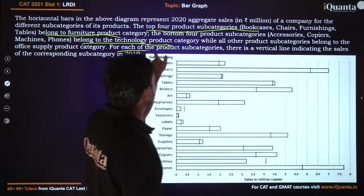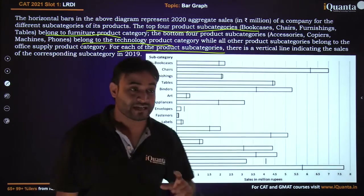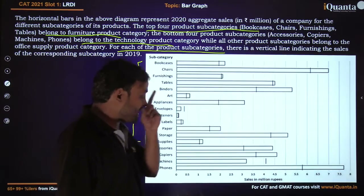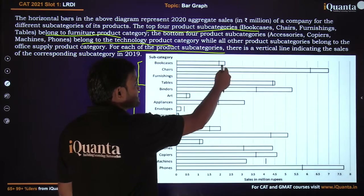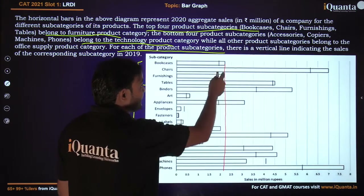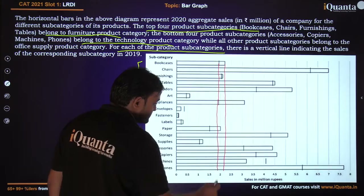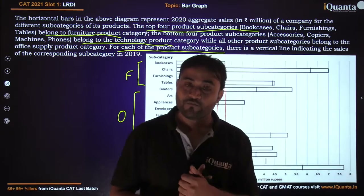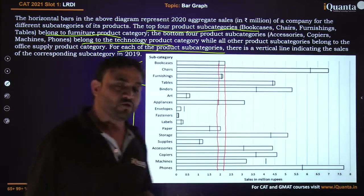For each of the product subcategories there is a vertical line indicating the sales of the corresponding subcategory in 2019. For example, for bookcase the sale in 2020 was around 2.2, and the vertical line shows the sale in 2019 was close to 1.9. So for each subcategory we can find out the revenue in both 2020 and 2019.